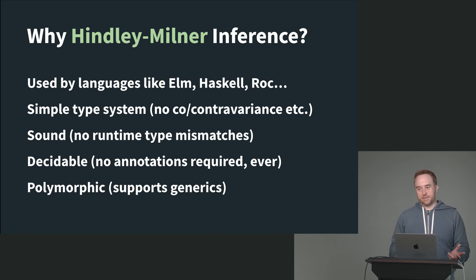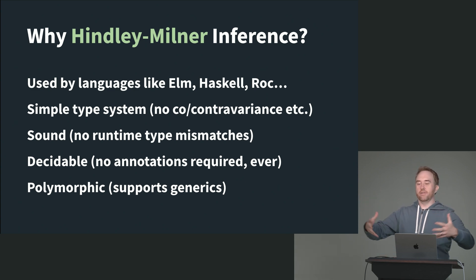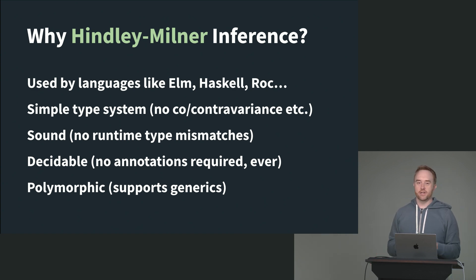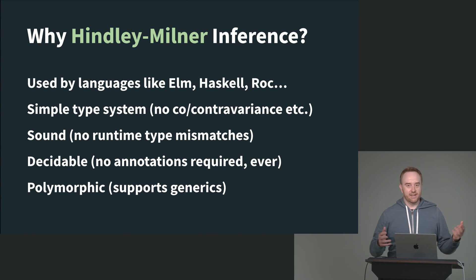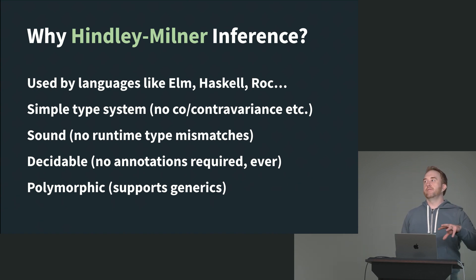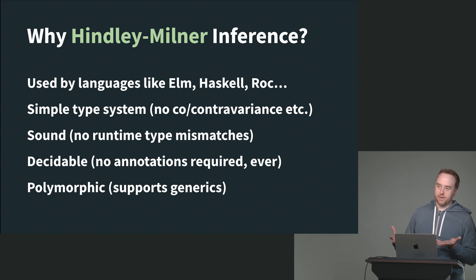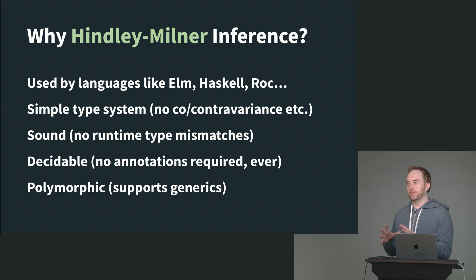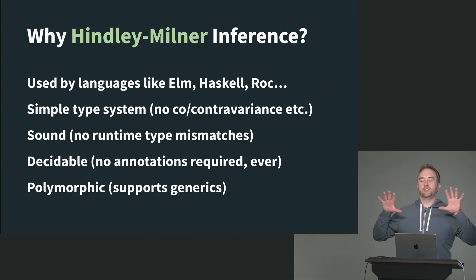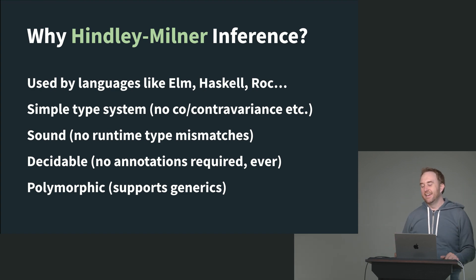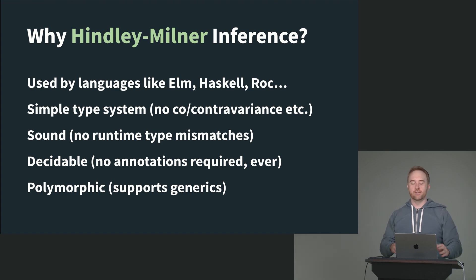Hindley-Milner is also polymorphic, meaning it can support generics. You can say you have an array of strings or an array of numbers — that type parameter thing. Go famously didn't have generics for a long time, which was a big controversy; eventually they added them. What they added is the form of generics known as parametric polymorphism, which is exactly what we're doing here. Parametric polymorphism — some people use it interchangeably with the term generics, although generics usually has a bit more of an object-oriented connotation. Parametric polymorphism is the most general form: you have type parameters, and they're a thing. That's what all the functional languages using Hindley-Milner inference use, and it works great.